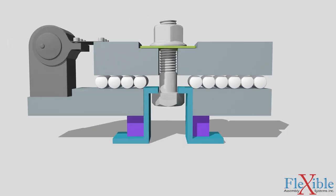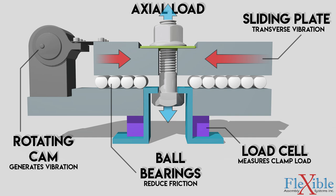The fixture consists of an upper and lower plate which are clamped together using a fastener, which generates axial load. This axial load, or clamp load, is measured by two load cells at the bottom of the fixture.